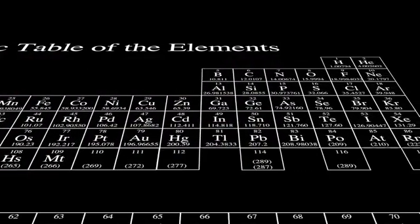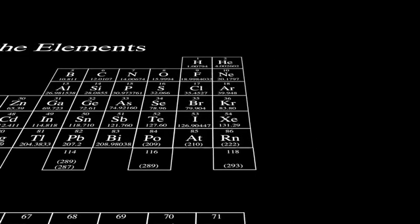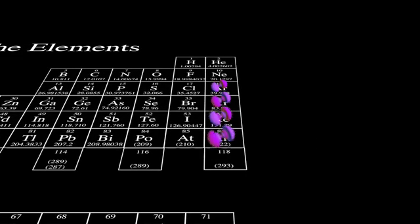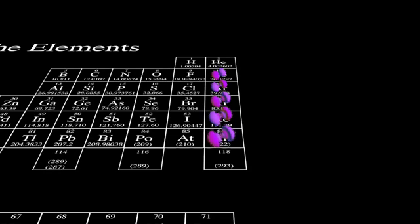All of the elements in the table are arranged into groups based on different values of L. Elements in a given column have their outer electrons in similarly shaped orbitals, and this means they have similar chemical properties.